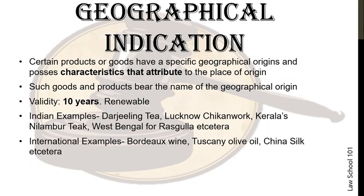GI may seem unimportant on the face of it, but it isn't, as it holds relevance even in contemporary times. Recently, there was a whole controversy regarding the GI of Rasgulla between the two states Odisha and Bengal, which was pretty much in the news — and is therefore important for CLAT. GI is as much important to study as the other three types of IP.